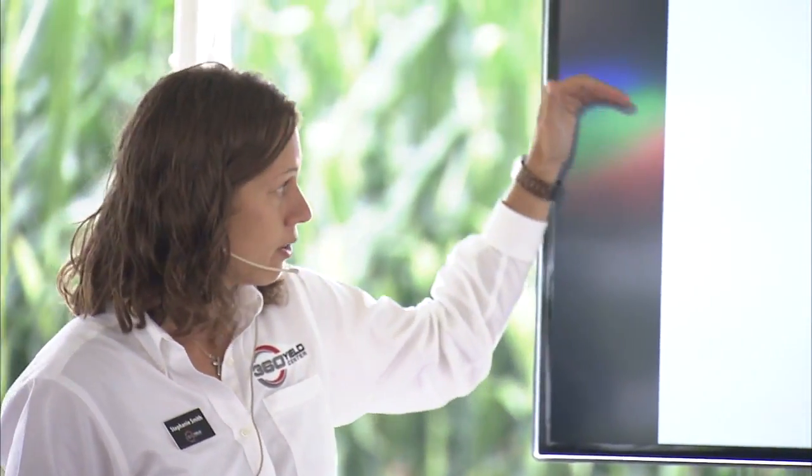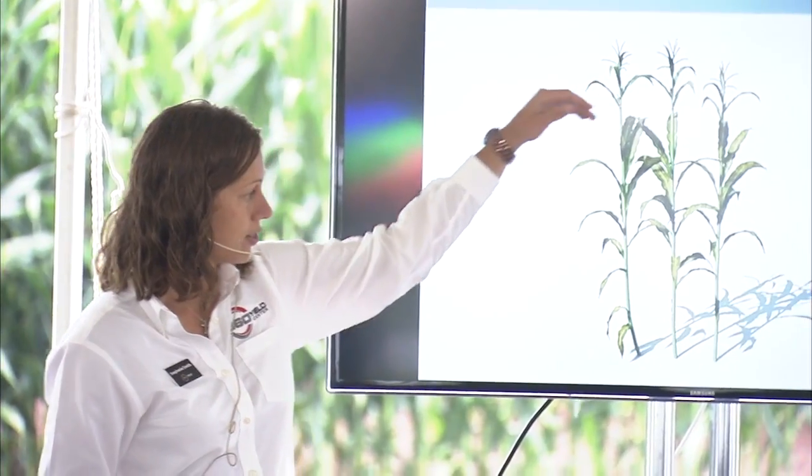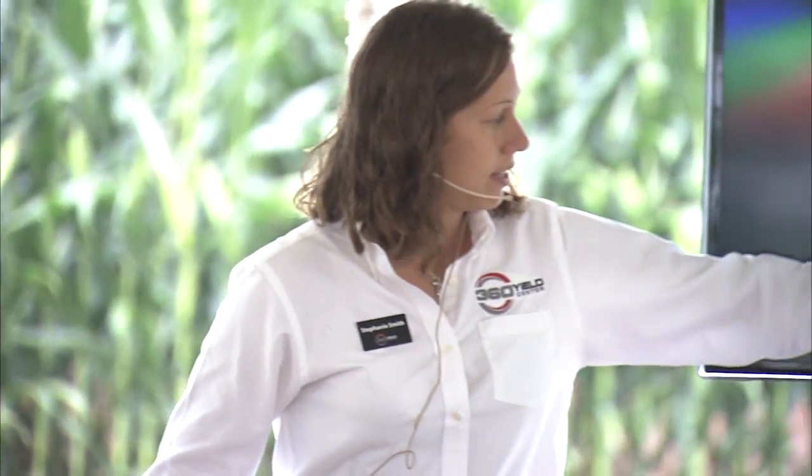So why not take a good product — we know that these fungicides are good products — and make them great? Let's apply them at the time, rate, and precise placement on that plant that we can best extrapolate yield. When I think of the two timings we make in fungicide today, we have brown silk so we're up high, and V5 to V6 so we're pretty low on the plant. Today, that application made at V5 and V6 — that leaf that was protected has probably fallen off into the ground. So my question is, how do we make it better?